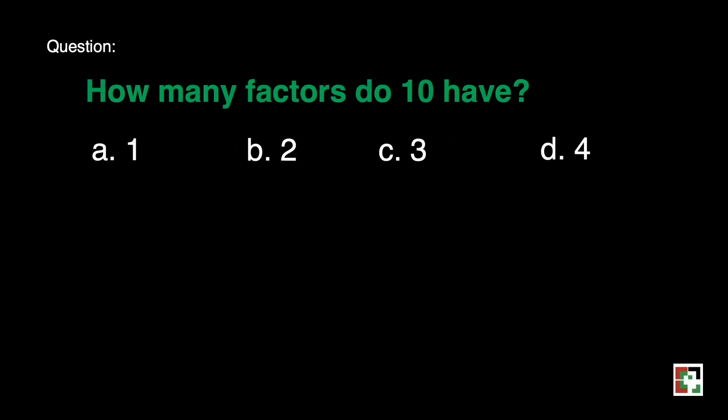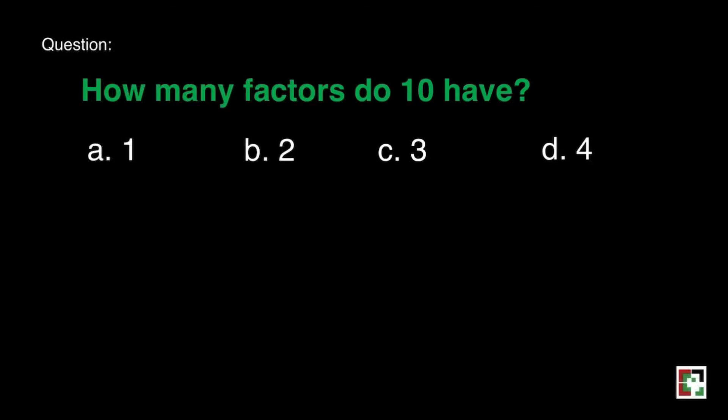Next question. How many factors do 10 have? A, 1, B, 2, C, 3, D, 4. We can use the listing method again to solve this question. Let's have 10. What numbers can we multiply to get a 10? And that is 10 times 1. What else? That is 5 times 2.